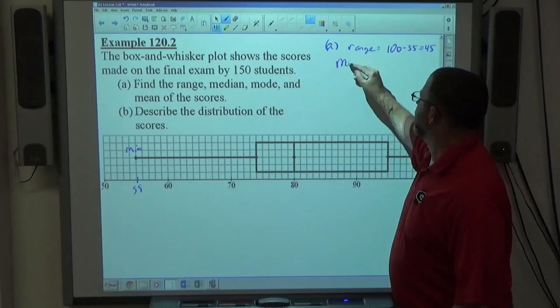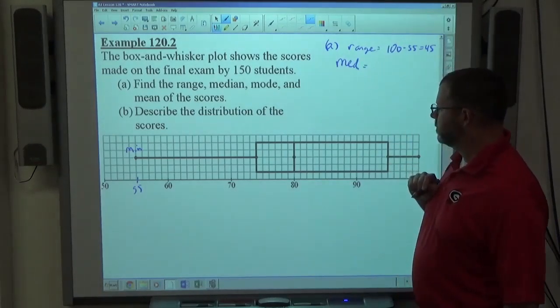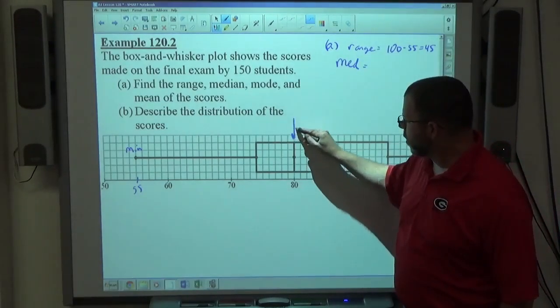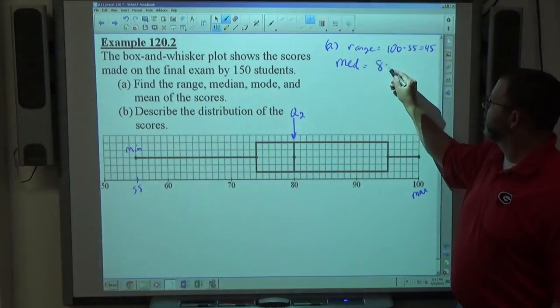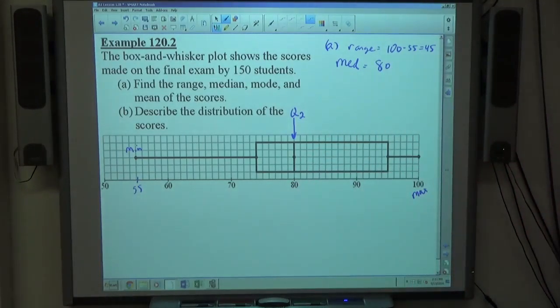Next thing going on is the median. Do we have enough information to find that? Absolutely. The median is just the quartile two score, so it's 80.